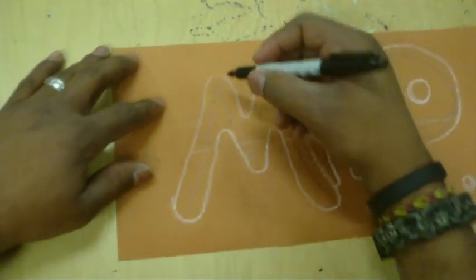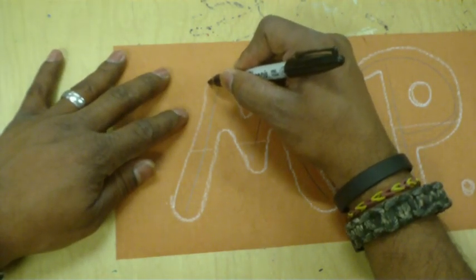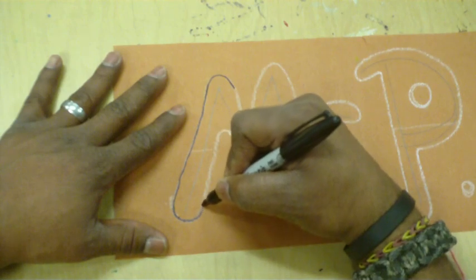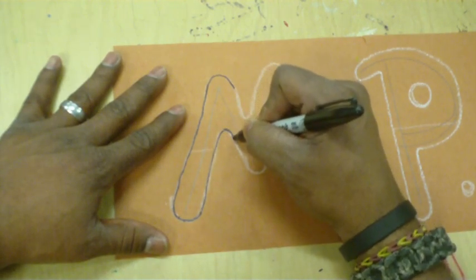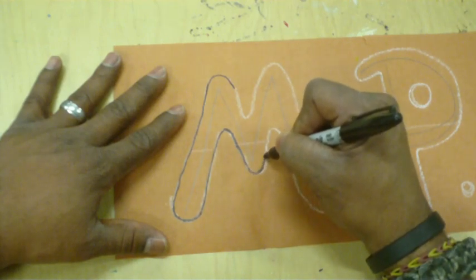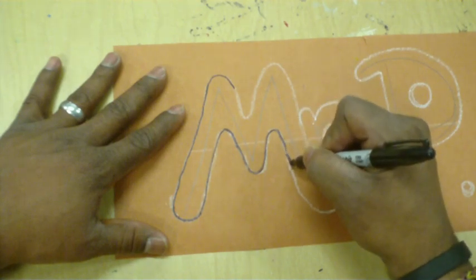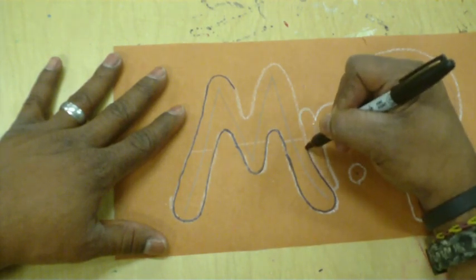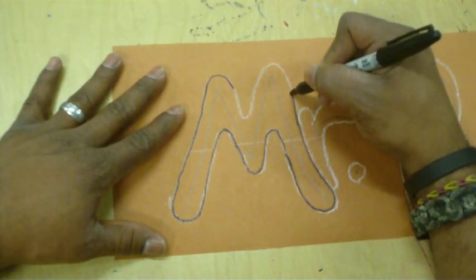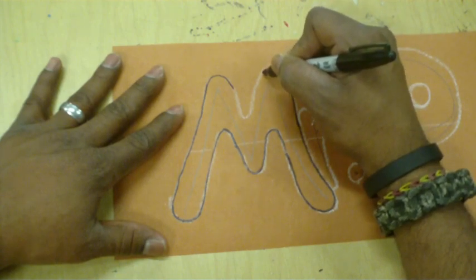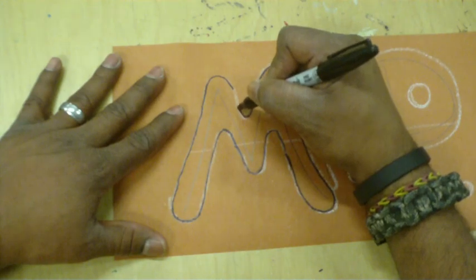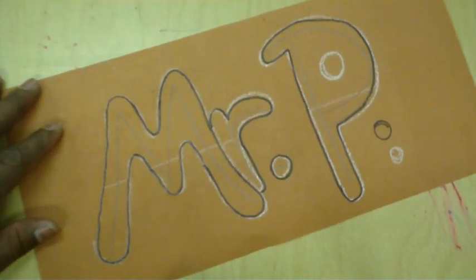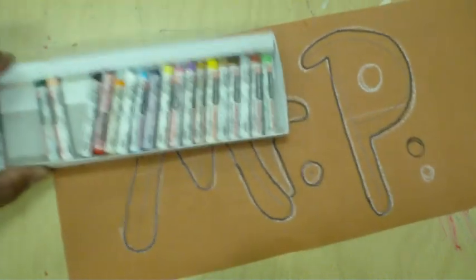Let's go ahead and take the Sharpie now and trace over the white crayon mark. Not the pencil line, only the white crayon mark. That's going to give us a definitive line that we're going to need to stay inside of with our oil pastels. Make sure that we stay on the white crayon or whatever color crayon you use. Just make sure you stay on the color with the Sharpie. Let's go ahead and get this done for the M. We're going to do the same thing for the R. And we're going to do the same for the P.